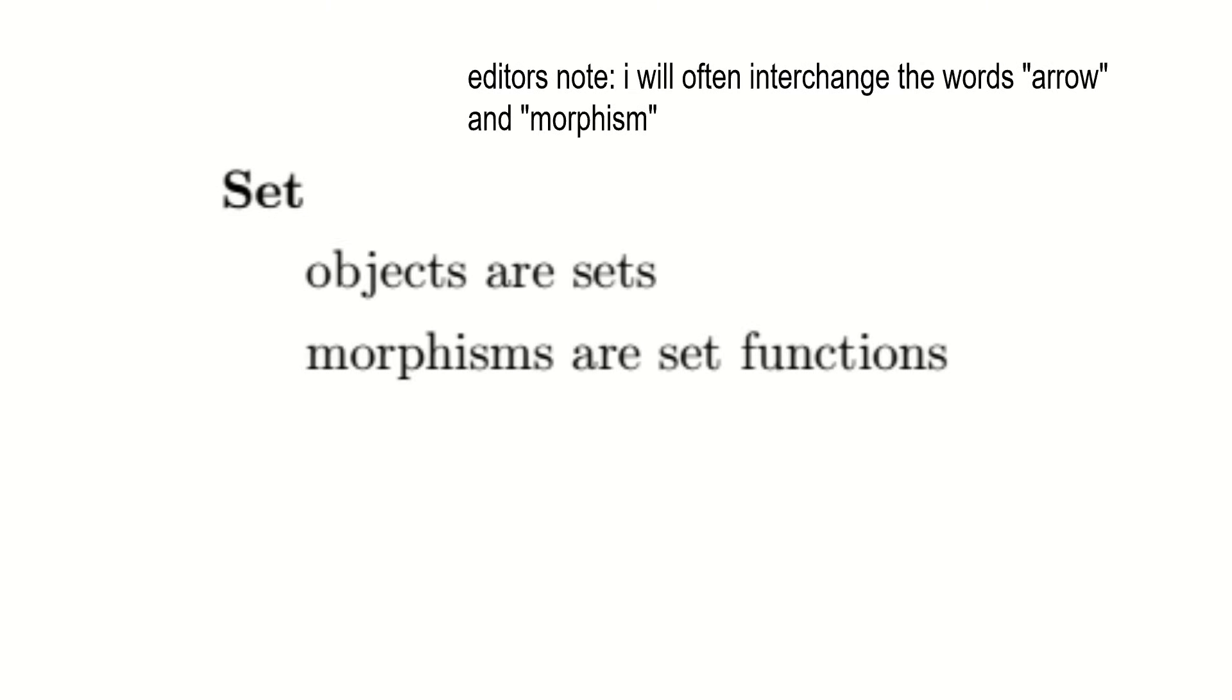For examples of categories, we have Set, the category of sets. The objects are sets, the arrows are functions between sets, and composition of arrows is defined as composition of functions. Isomorphisms in this category are bijections.